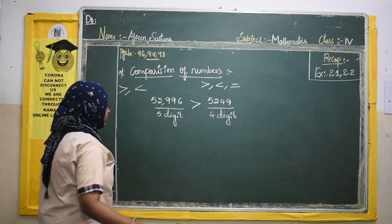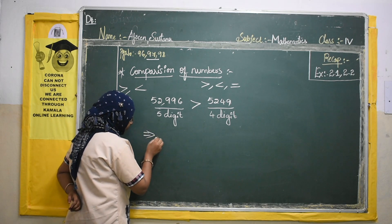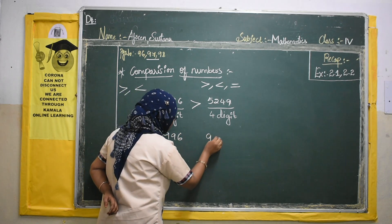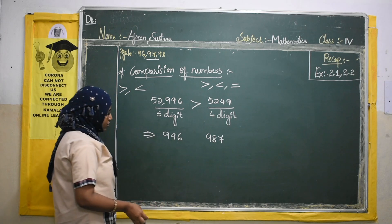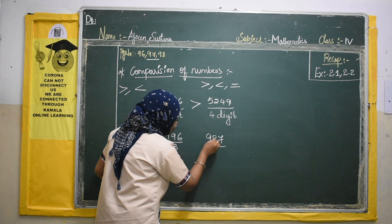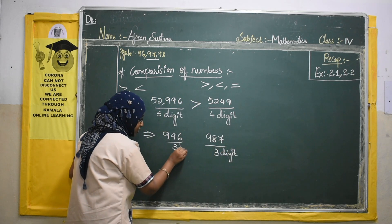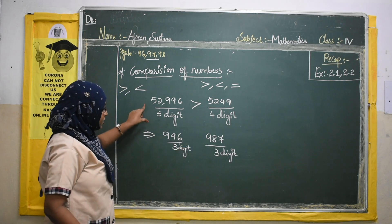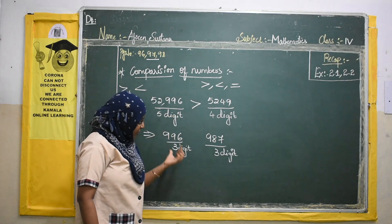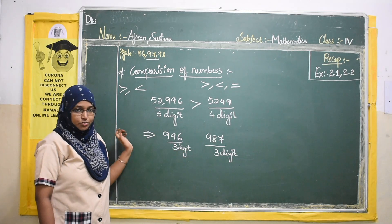Now suppose they give the same number of digits in both numbers — for example, both are 4-digit numbers. Here also both numbers have 3 digits and in this number also they have 3 digits. Now both are the same. The condition we saw earlier — more digits means greater — does not apply here. So how do we check which is the greatest?